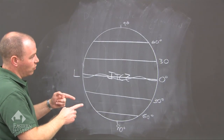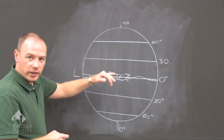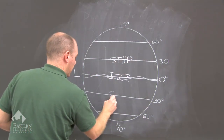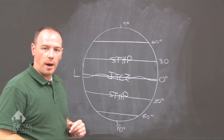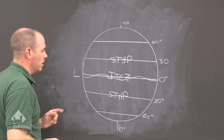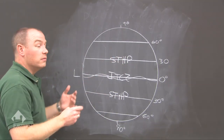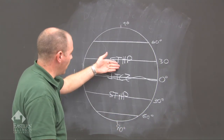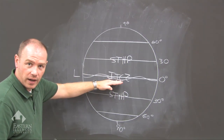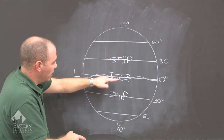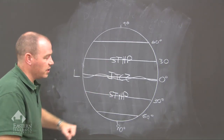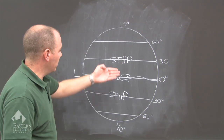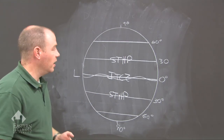Moving north and south, hovering around 30 degrees north and 30 degrees south, is the STHP — the subtropical high pressure belt. Underneath this, you have air that is sinking and diverging, so this is an area of divergence. The STHP influences the distribution of deserts; one particular desert it creates is the Sahara Desert.